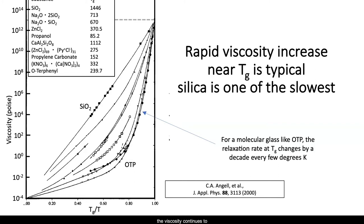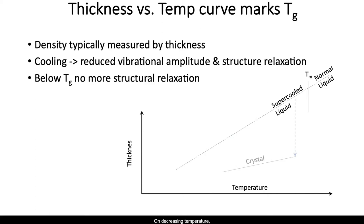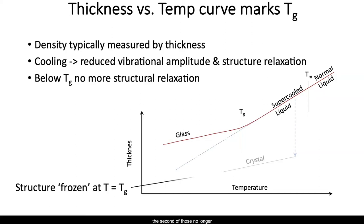And not shown here, the viscosity continues to increase at a similar rate as one cools further. The density increases too, but with a difference. The density is determined by two components: the vibrational amplitude that stretches the structure, and the configuration — that is, how the atoms are packed. On decreasing temperature, the structure shrinks because of reduced vibration and collapsing to a lower energy configuration. Below Tg, the second of these two no longer happens. The structure is frozen so that the rate of density change decreases.